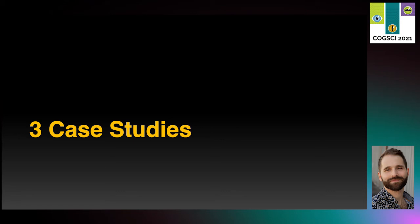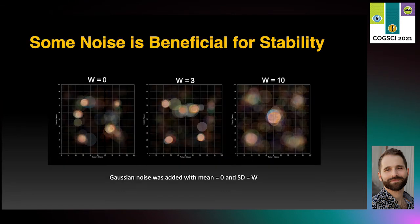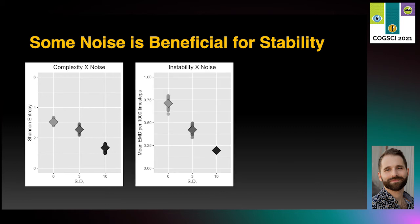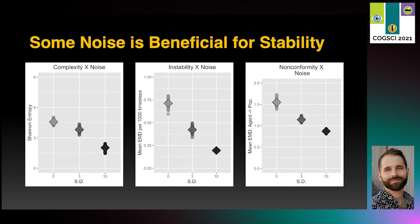Now I'll briefly show you three case studies illustrating the utility of the model. First, we found that some noise is actually beneficial for the stability of these distributions. Here I'm showing the end state of the model for three levels of Gaussian noise added to transmission. When noise is high on the right, categories tend to neatly distribute throughout the space. When transmission is noisy, categories become more diffuse, so fewer of them can be maintained in the same space, making the distributions less complex. But noise also slows the learning process, which makes the distributions more stable, so individuals can become more closely cognitively aligned to their populations. There appears to be a trade-off between the effect of noise on reducing complexity and the benefit of noise on increasing stability.